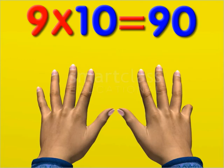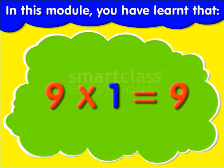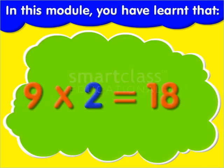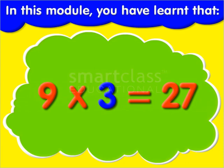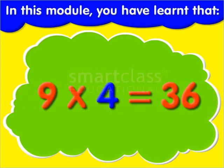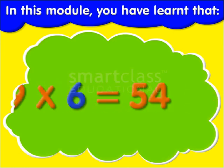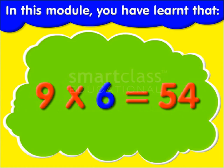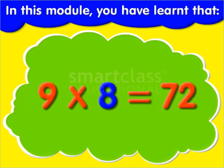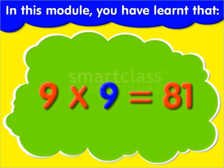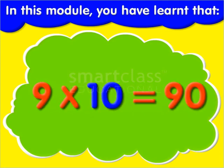Now you know the multiplication table of 9. In this module, you have learnt that 9 times 1 is 9, 9 times 2 is 18, 9 times 3 is 27, 9 times 4 is 36, 9 times 5 is 45, 9 times 6 is 54, 9 times 7 is 63, 9 times 8 is 72, 9 times 9 is 81, and 9 times 10 is 90.